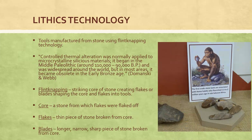Lithic tools are manufactured from stone using flint knapping technology, around 110,000 to 90,000 BP. Controlled thermal alteration was normally applied to micro-crystalline silica materials. It began in the Middle Paleolithic and was widespread around the world, but in most areas it became obsolete in the early Bronze Age.